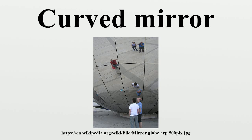If the object distance term is larger than the focal length term, the image distance is positive and the image is real. Otherwise, the image distance term is negative and the image is virtual. The magnification of a mirror is defined as the height of the image divided by the height of the object. By convention, if the resulting magnification is positive, the image is upright; if the magnification is negative, the image is inverted.